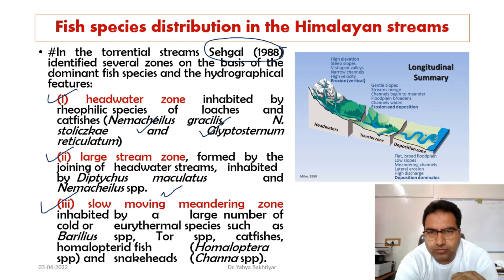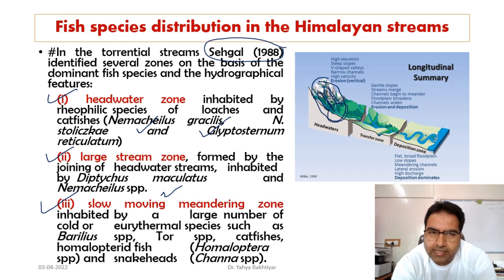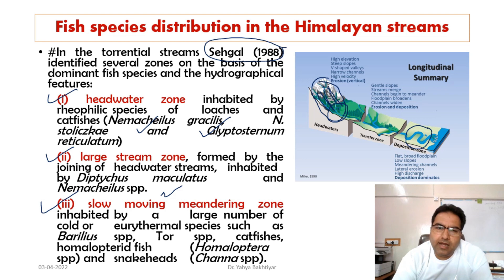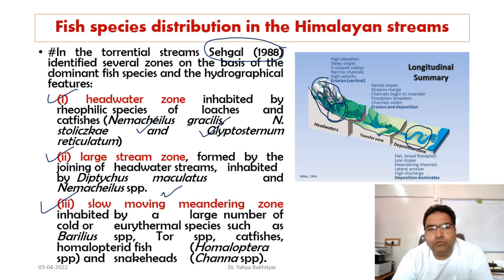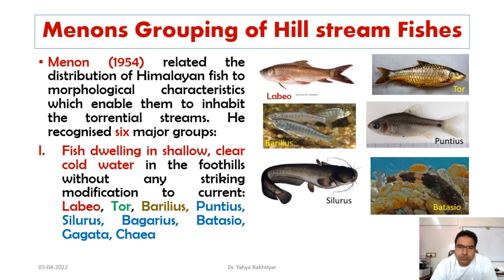The slow meandering zone is where rivers meander and their rate of flow slows down. It is inhabited by a large number of cold and eurythermal species such as Barilius, Tor, catfishes, homalopterid fishes like Homaloptera, and snakeheads such as Channa punctatus and Channa gachua. Coming to today's topic: the grouping of hillstream fishes by Menon.